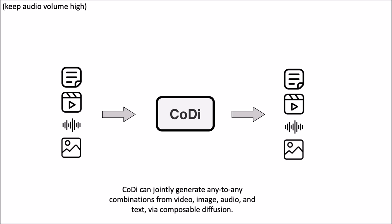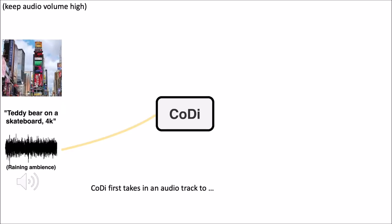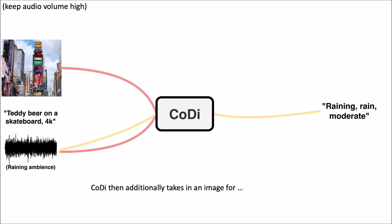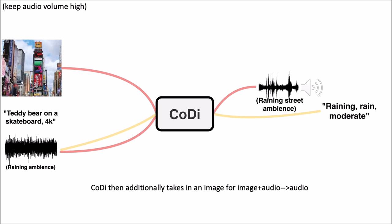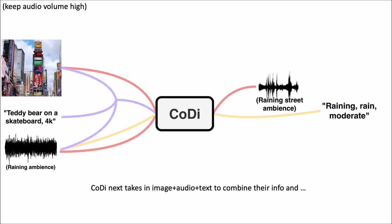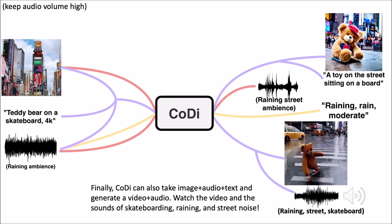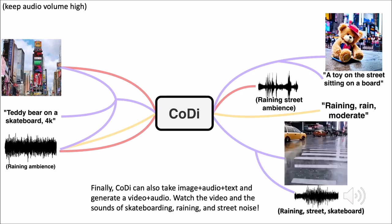The key idea behind Kodi is its concept of composable diffusion. Composability refers to the ability to combine or compose different diffusion models to generate data samples that span multiple domains. In the context of Kodi, this means you can generate samples that are seamlessly transitionable into different types of data, such as generating an image that corresponds to a given text.